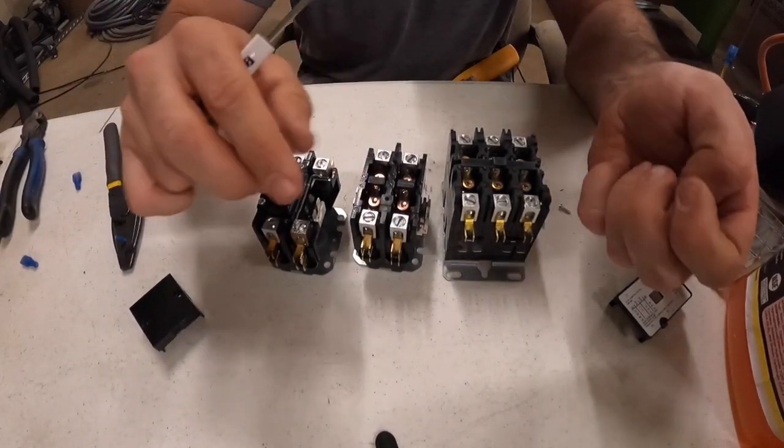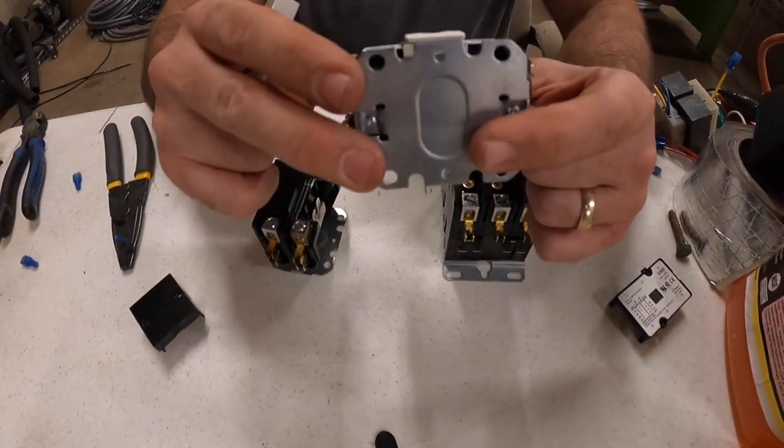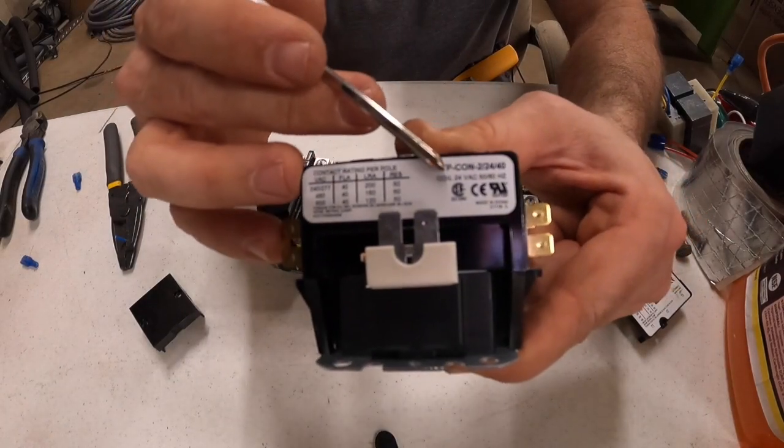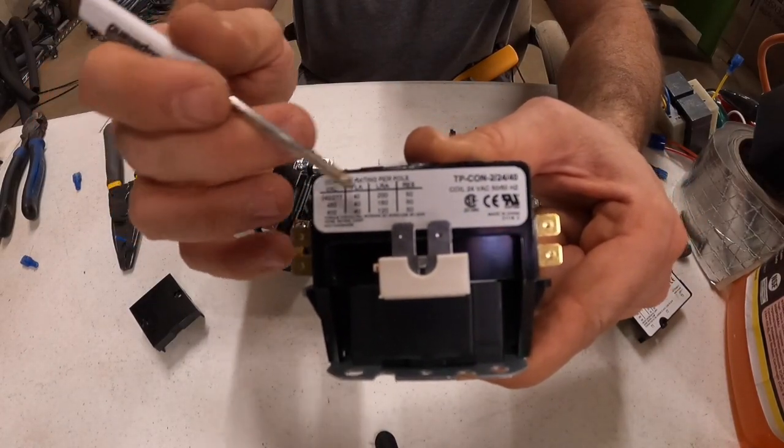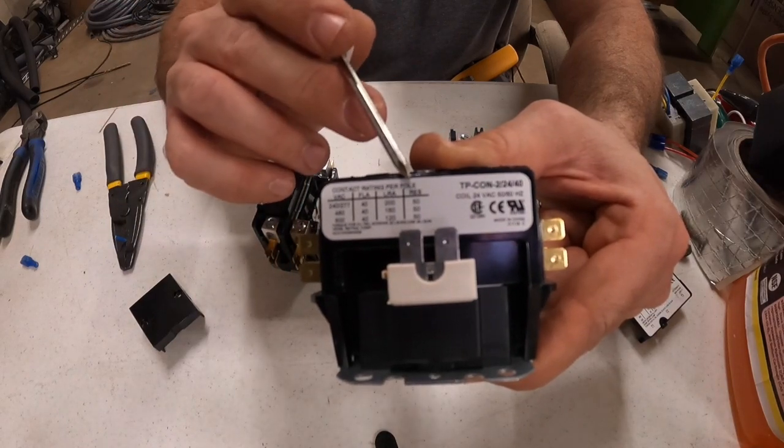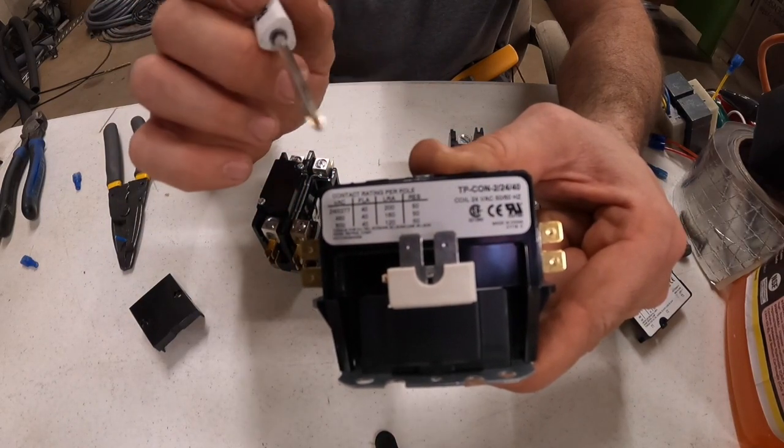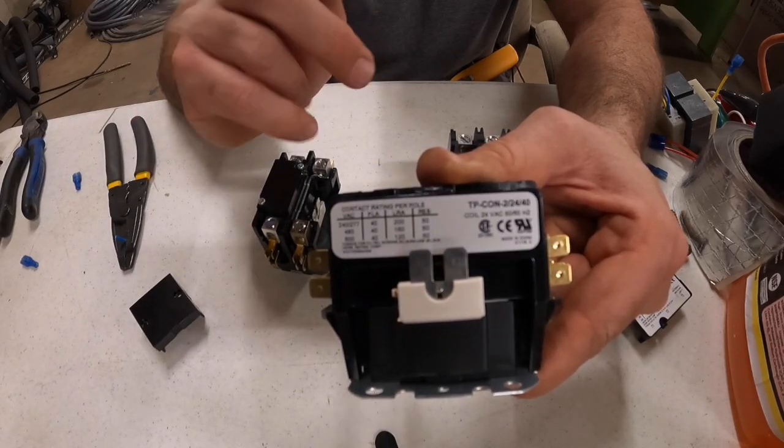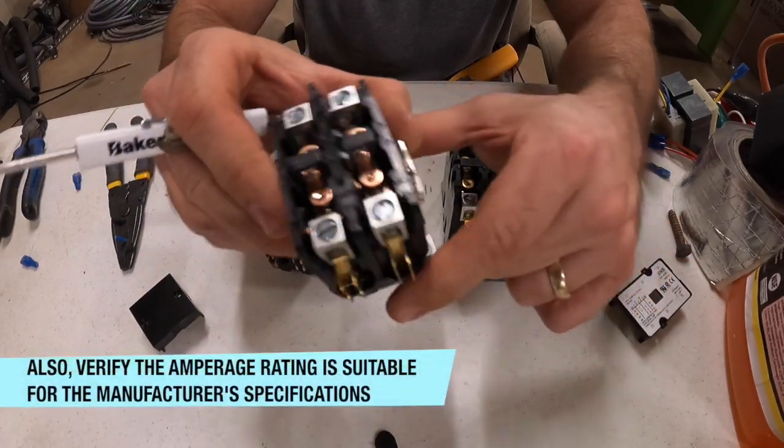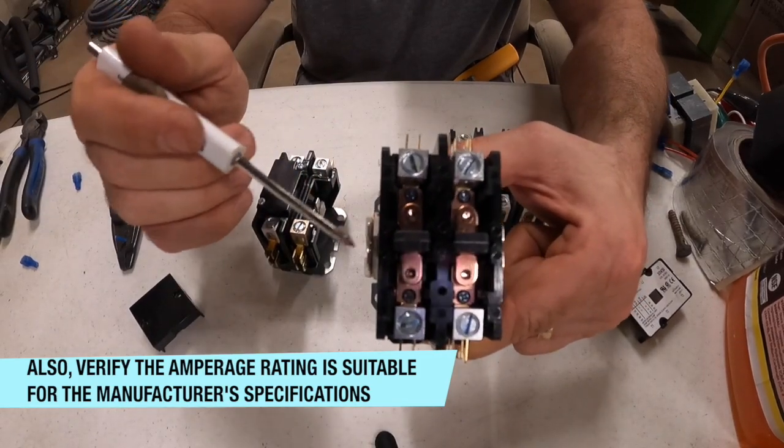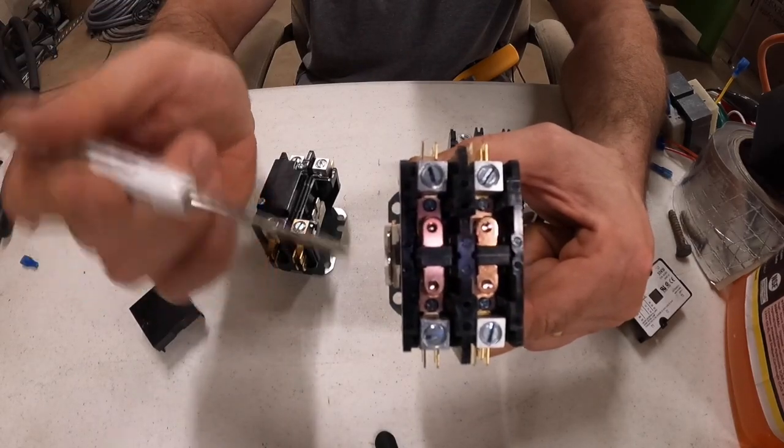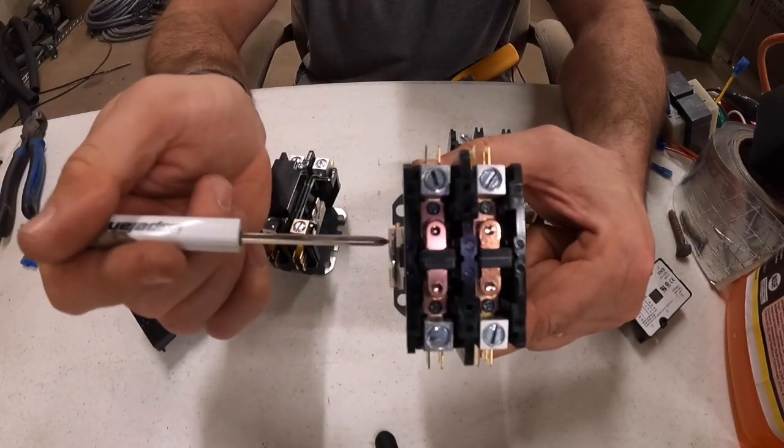A two-pole contactor has two sets of contacts. This is a 24-volt coil with all your ratings on the side. When you're checking things, make sure you see what voltage is needed for the control side, so you know what you're checking for and what it's rated for. On this one, the 24 volts is going to come in here. This is where you would check for 24 volts.